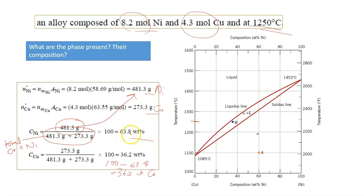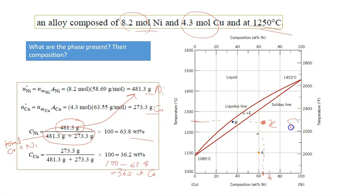You need to identify the location of 63.8 weight percent of nickel on the phase diagram. 63.8 is around here — this is the temperature — so this is the point X. Now that you have identified the point, which represents 8.2 mol nickel and 4.3 mol copper, you can answer the question. The phase present at this point is simply solid — definitely solid, no liquid, not in the two-phase region. The composition is 63.8 weight percent of nickel.